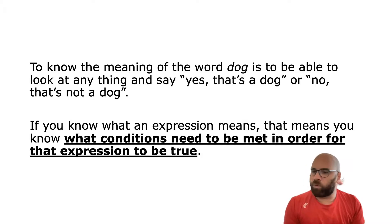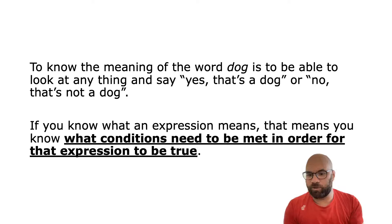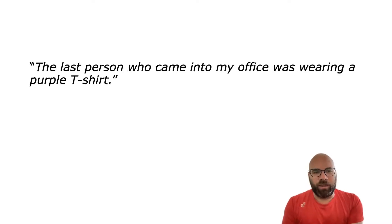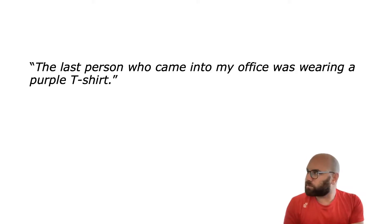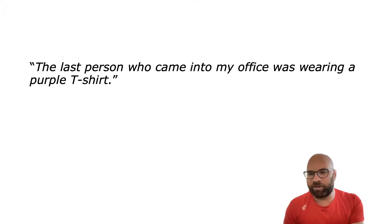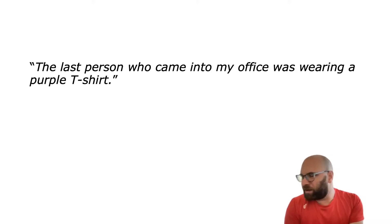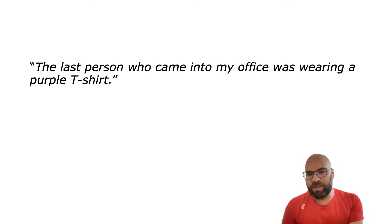It doesn't mean that you know the sentence is true or not. It just means you know the conditions that it would need to be true. So to take another example, if I say the last person who came into my office was wearing a purple T-shirt, you probably don't know if that's true or not — assuming you don't have a camera in my office and you're not a spy. You don't know who came into my office last or if they were wearing a purple T-shirt, but you know what would need to happen for this sentence to be true. And that's what it is to know what this sentence means. So that's the idea of truth conditions.